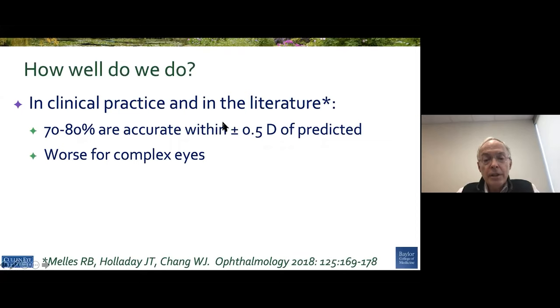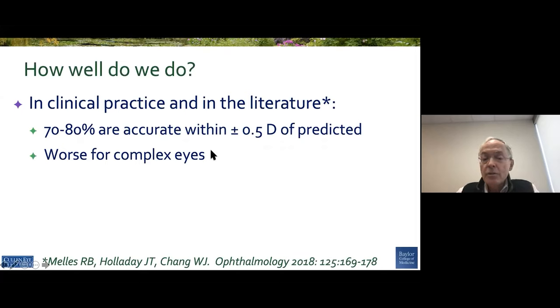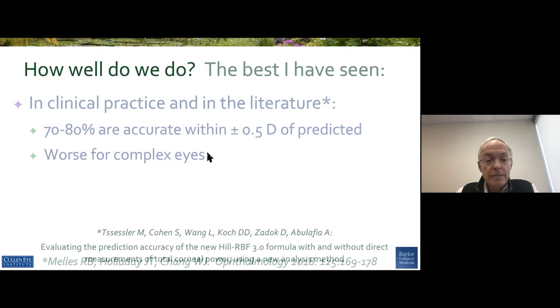the largest study that came out in 2018 said that 80% were accurate within about a half diopter of predicted, and it's certainly worse for complex eyes.